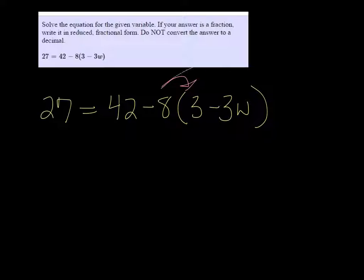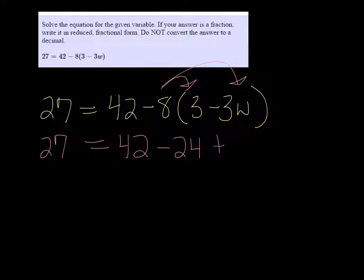This minus 8 has to go through to the 3 and the negative 3w by multiplication. So we get 27 equals 42 minus 24 plus 24w.